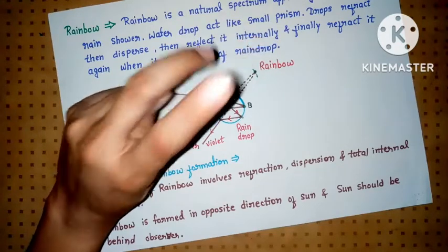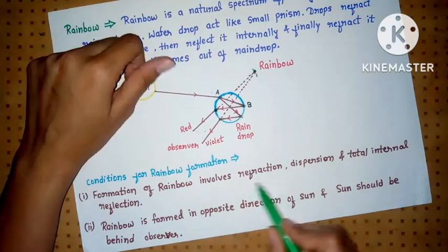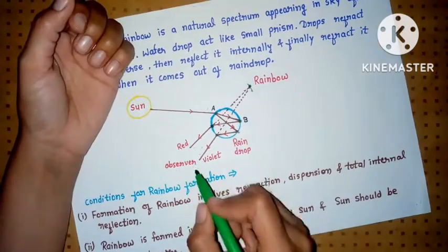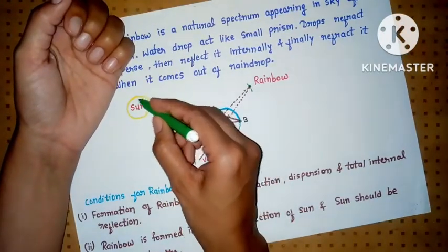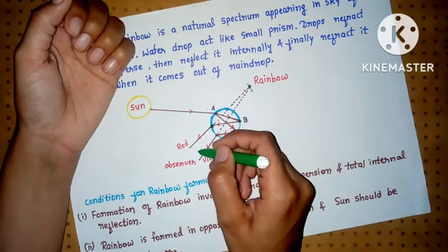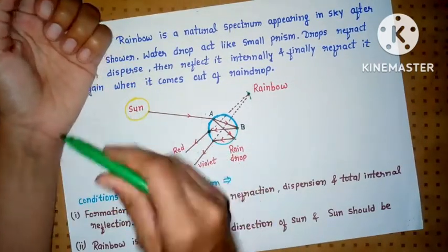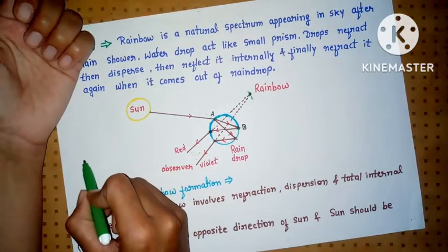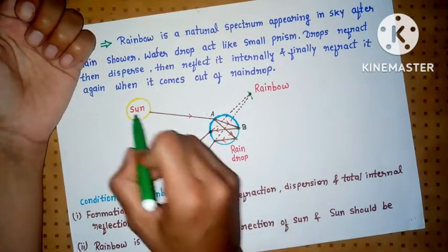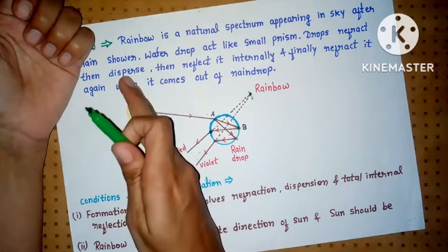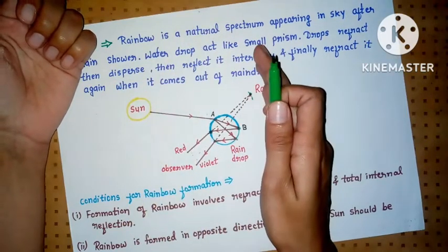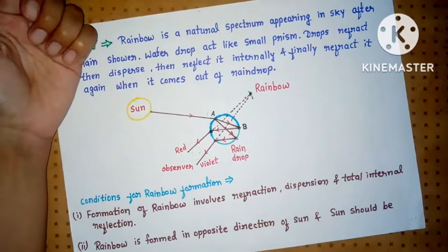The second point is that the sun should be behind the observer. The sun should be behind, and the rainbow forms in the opposite direction, right in front.